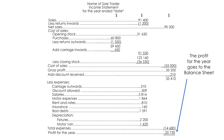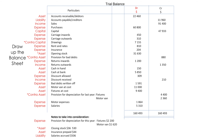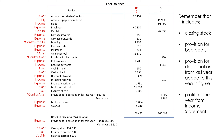The profit for the year goes to the balance sheet. Draw up the balance sheet. Remember that it includes closing stock, provision for bad debts, provision for depreciation from last year added to this year's figure, and profit for the year from the income statement.